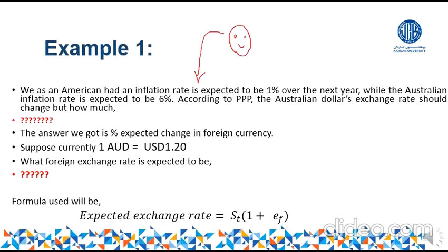Hello ladies and gentlemen, this is Osman Ali and I'm recording the video for our first example related to the Purchasing Power Parity chapter. The objective of the example is to calculate the forward rate or the future spot rate of the Australian dollar to USD.